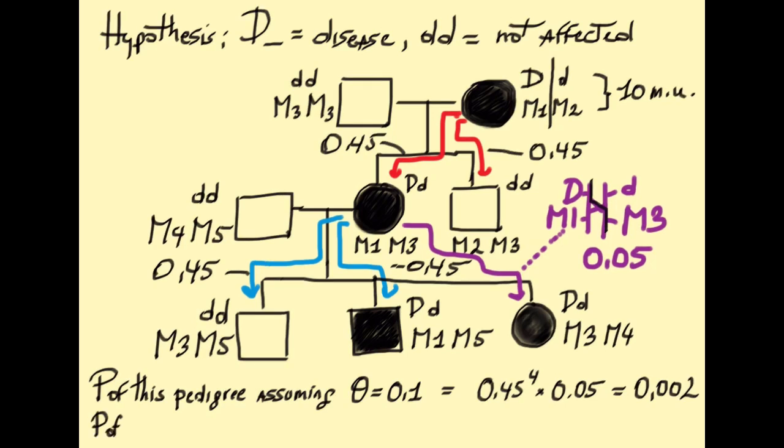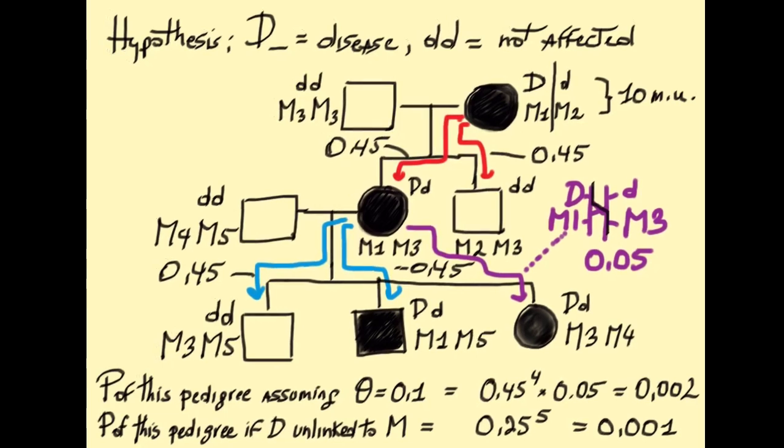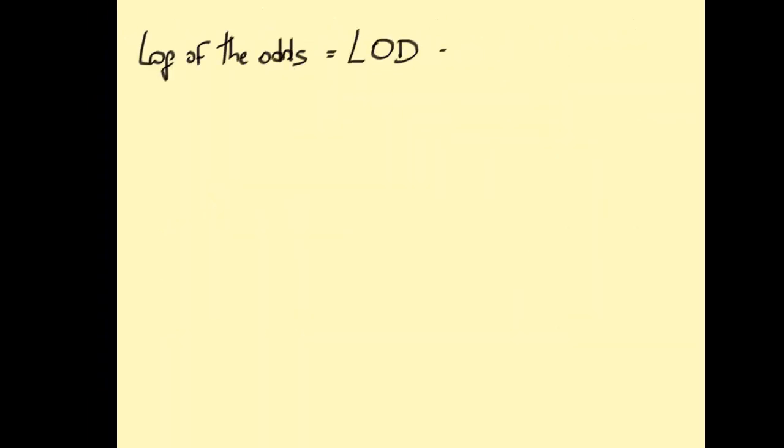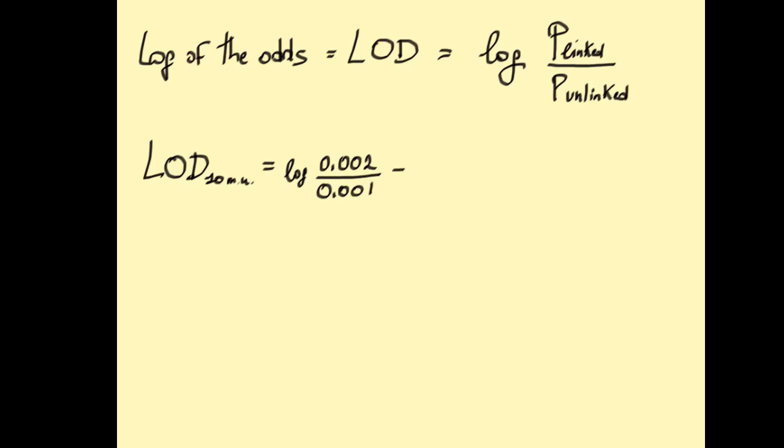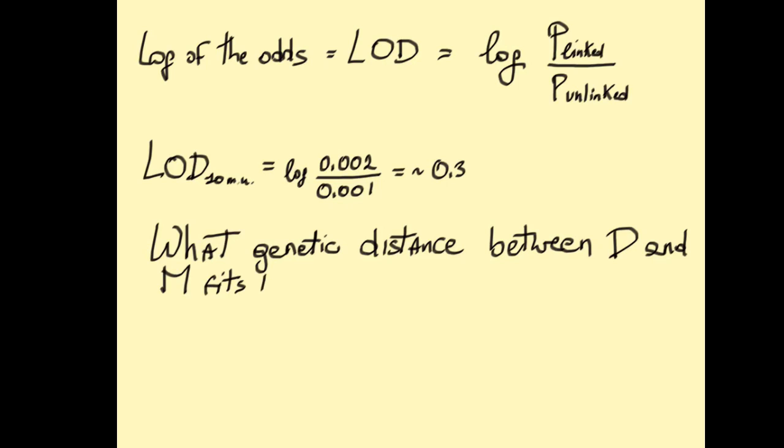The probability of the whole pedigree, assuming theta equals 0.5, is easy. That is, under no linkage, it is equal to 0.001. You can do the calculation yourself, right? We can now calculate the log of the odds. It is equal to the log of P linked over P unlinked, which for 10 map units is about 0.3.